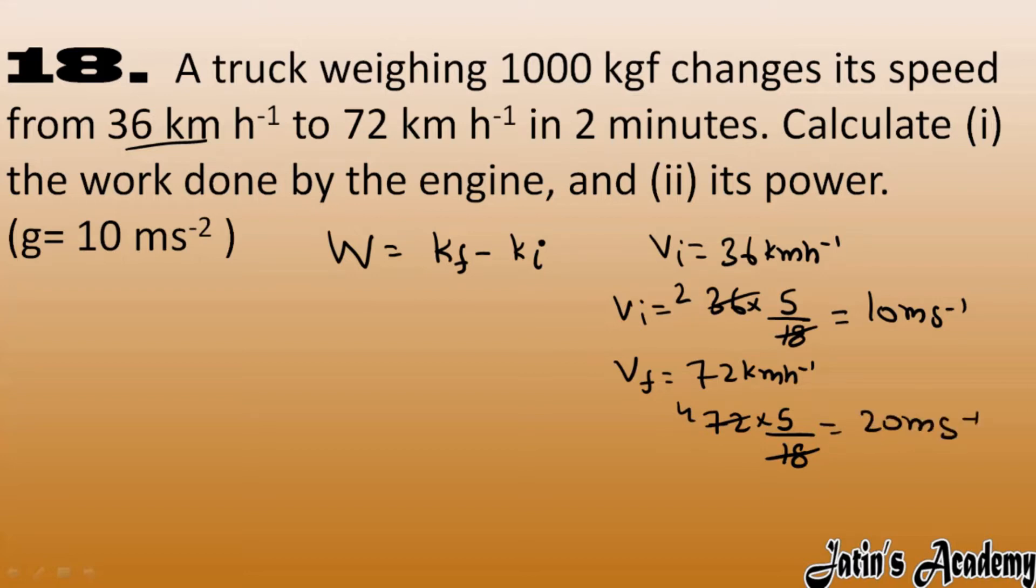We have calculated the velocities, now let's calculate the kinetic energy but before that we have to calculate the mass. So here mass is given as 1000 kgf which equals weight. Actually it is mg. kgf means 1000 into g. So from here g and g cancel out, mass value is given as 1000 kg.